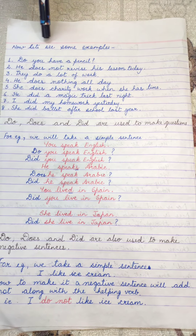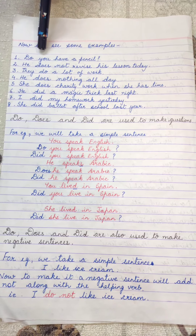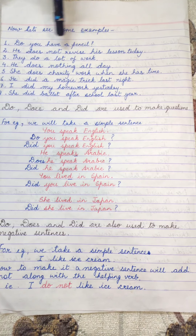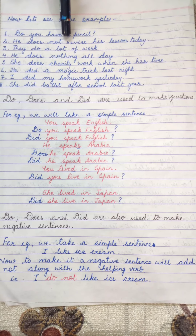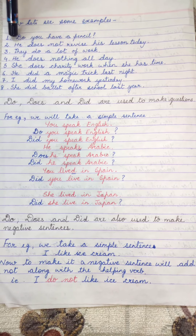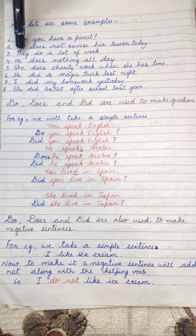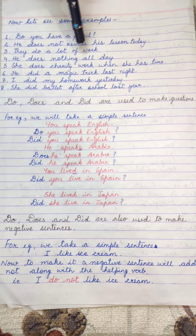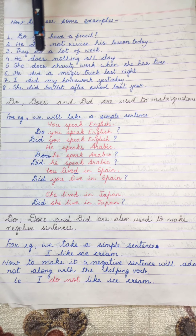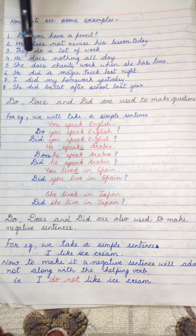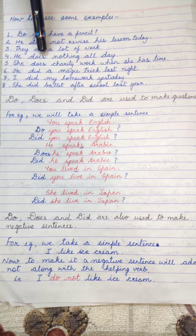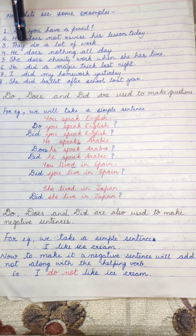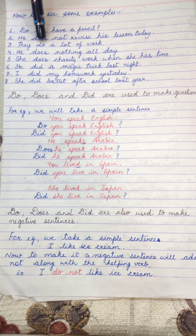Let us see some examples. Do you have a pencil? — here we are using 'do' with 'you'. He does not revise his lesson today — with 'he' we are using 'does'. They do a lot of work. He does nothing all day — again with 'he' we are using 'does'. He is a singular pronoun so we use 'does' with it. 'They' is plural, meaning more than one person, so we use 'do' with it.